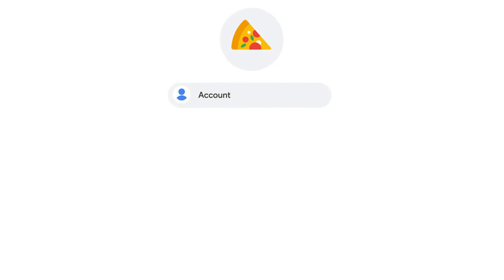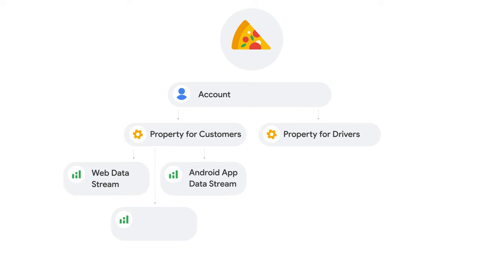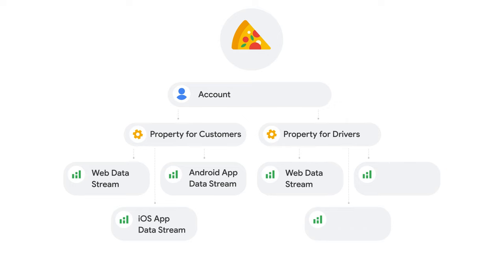Their account structure would look something like this: one analytics account with two properties, one focused on customers and the other focused on delivery drivers. The first property for customers would have three data streams — one web data stream for the website, one app data stream for the Android app, and one app data stream for the iOS app. The second property for delivery drivers would also have three data streams — one web data stream for the website, one app data stream for the Android app, and one app data stream for the iOS app.